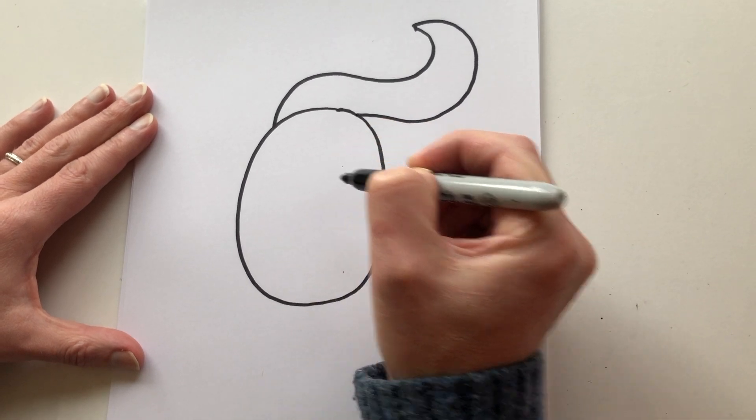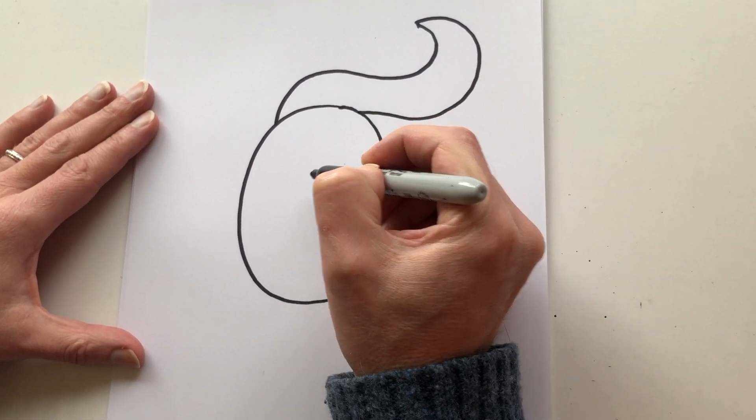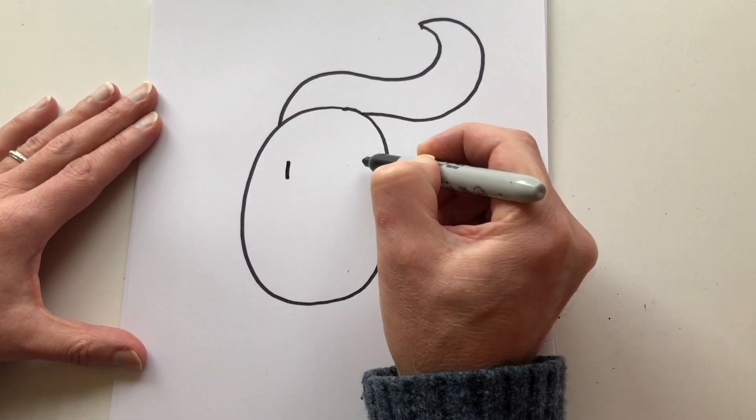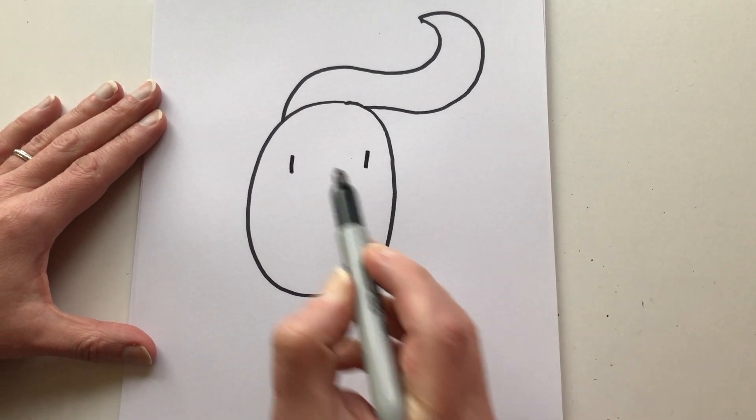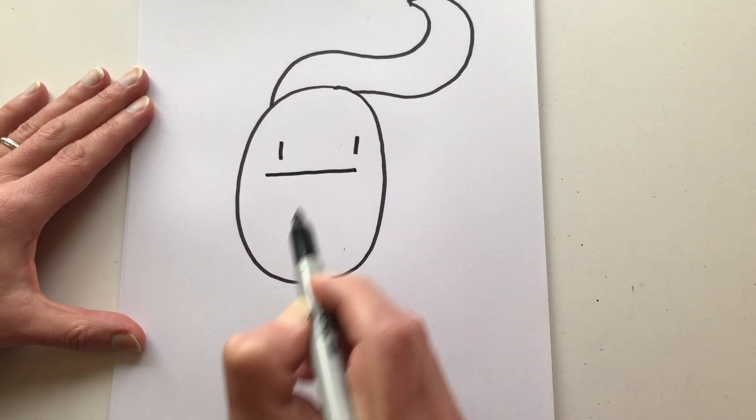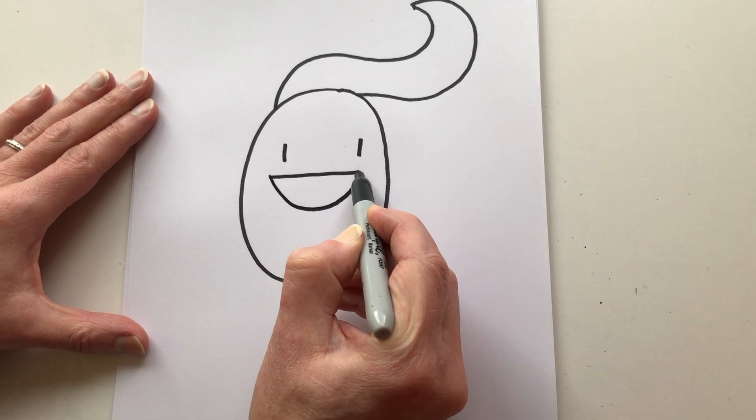Now, when we draw his face the easy way, it's the same as the hard way. Short line for one eye. Short line for the other eye. A line across. And a curved line underneath to make it a big smile.